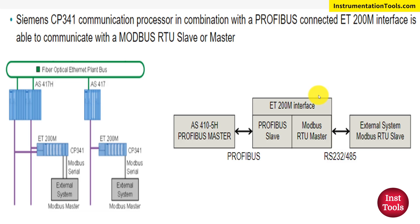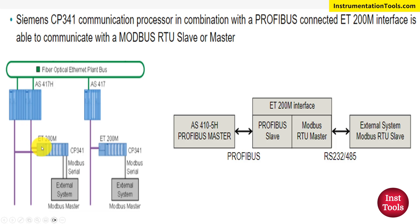In Siemens, there is a special communication processor card called CP341. It combines with Profibus connected to an ET200M interface. As we discussed in the last video, this will be termed as PlantBus. Lines shown in green color indicate ProfiNet, and lines shown in purple color indicate Profibus connections. As you can see, ET200M or remote I/O is established in the automation architecture.